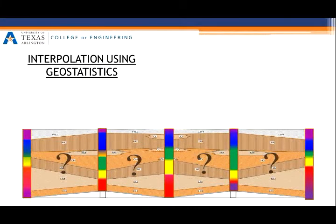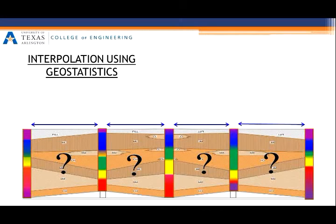Geostatistical methods estimate the value at unsampled locations by incorporating spatial variability of soils based on weightage of known sample locations.